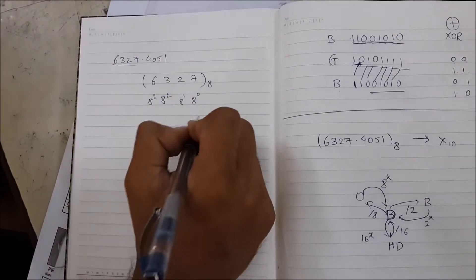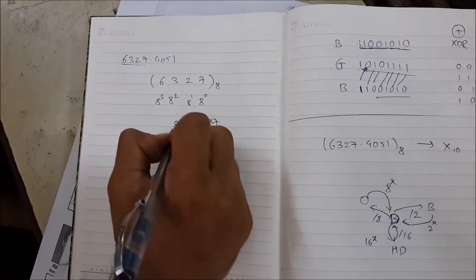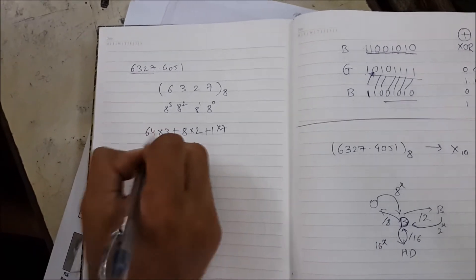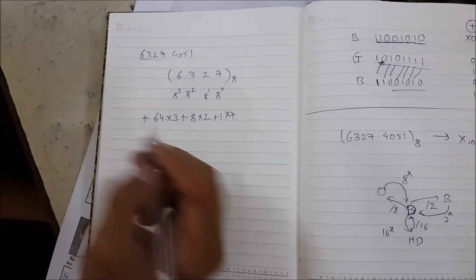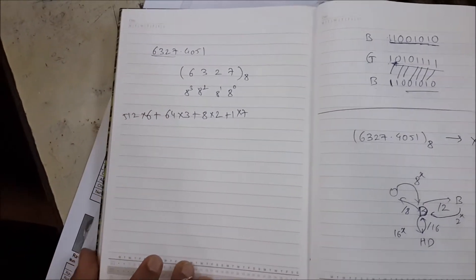Which is 1 times 7, plus 8 times 2, plus 64 times 3, plus 512 times 6. Clear.